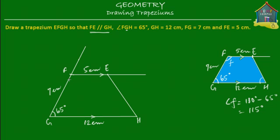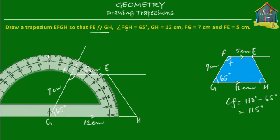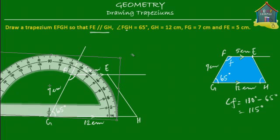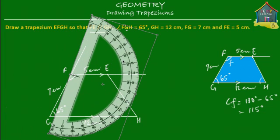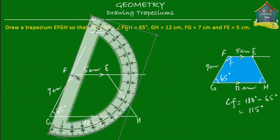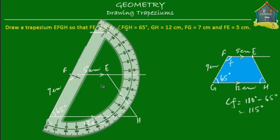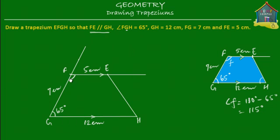Let's check if this angle is really equal to 115 degrees. We use a protractor, turn it, and place it at F. This line is at 110 and this is 115 — yes, this angle is equal to 115 degrees. So that's the trapezium EFGH that you've been asked to draw.